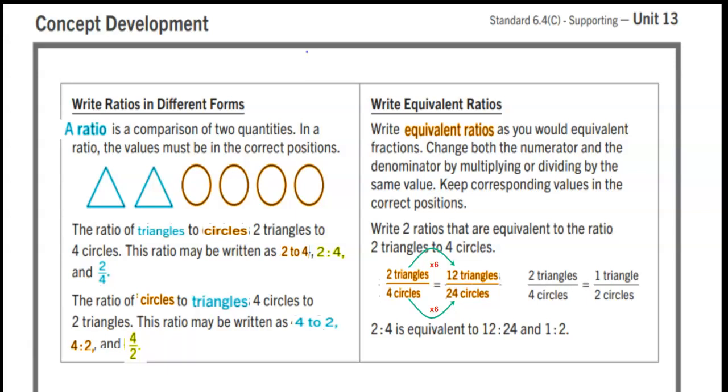Let's try two triangles over four circles and one triangle over two circles. We can get this equivalent ratio by dividing by two. Two divided by two is one and four divided by two is two.